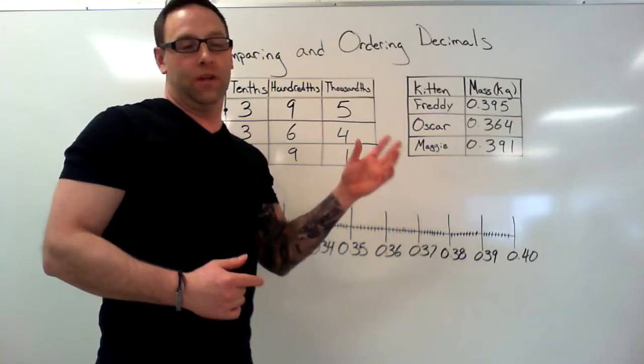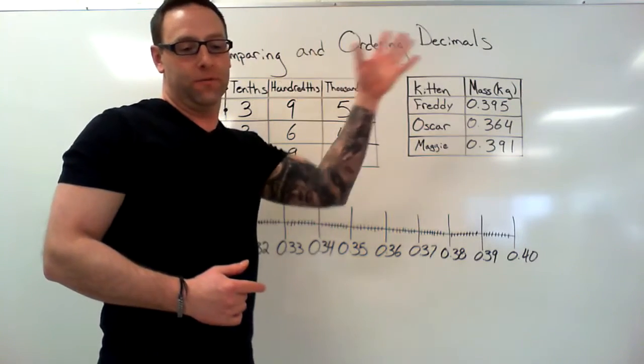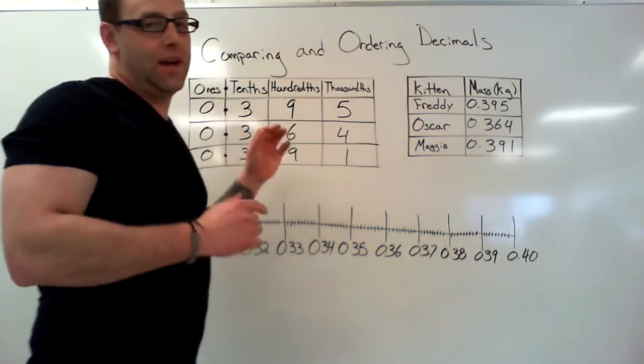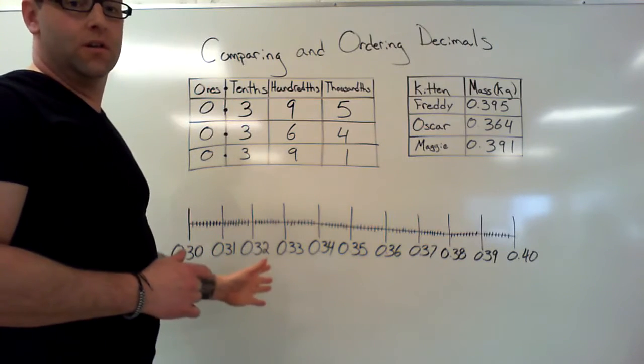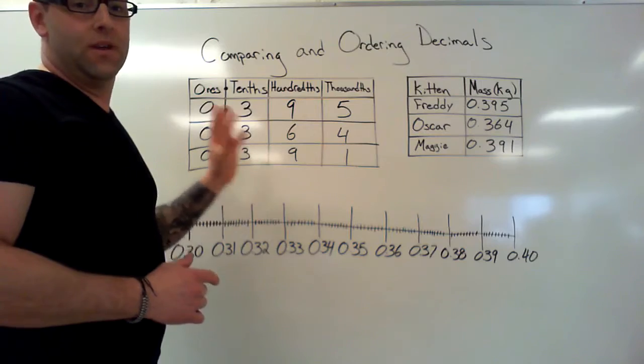Last time we talked about using a place value chart. We've also talked about using a number line. Today it's just going to be with decimals instead of fractions.